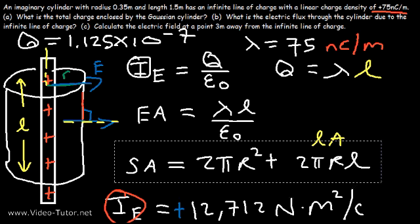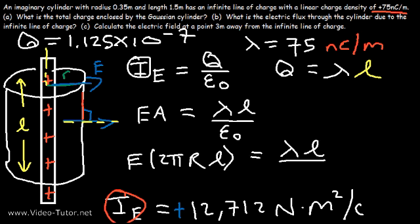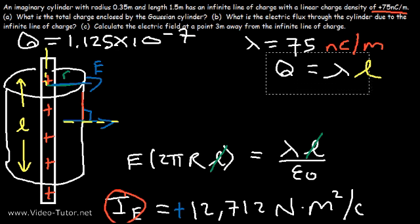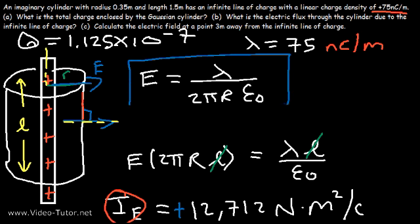So we use the lateral area 2πrL and replace A with it. This gives E times 2πrL equals lambda times L divided by epsilon sub-nought. Dividing both sides by L, and then by 2πr, the electric field equals lambda divided by 2πr times epsilon sub-nought. This is the equation for the electric field given an infinite line of charge.